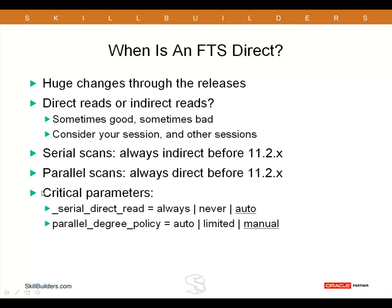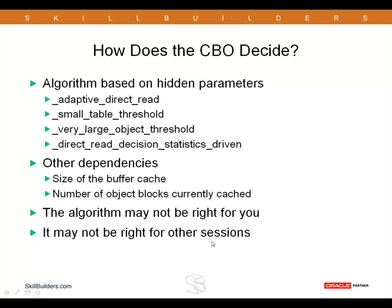So these two parameters are completely in the hands of Oracle. What is the algorithm that it uses? How does the cost-based optimizer actually decide how to do it? Well, it's based on a whole set of hidden parameters. I've listed four of them here: adaptive direct read — the name tells you that's fairly critical — then we have small table threshold, very large table threshold, and also direct read decision statistics driven, whether that decision between direct or indirect should take account of system statistics and object statistics.